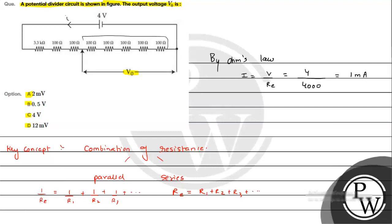Now we have to calculate the potential. We can say V0 will be equal to simply I into R equivalent.